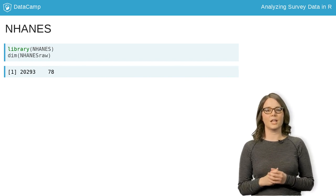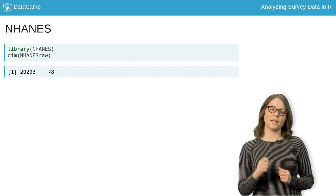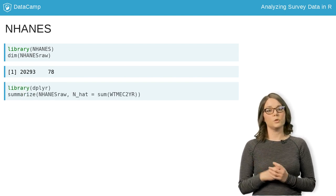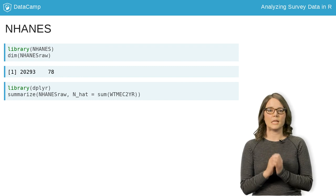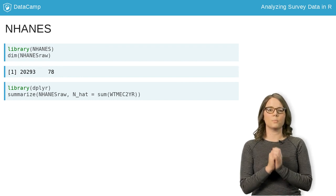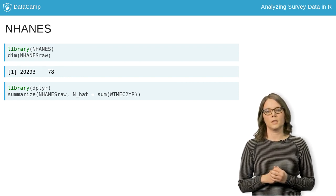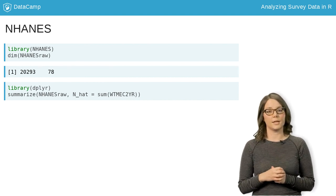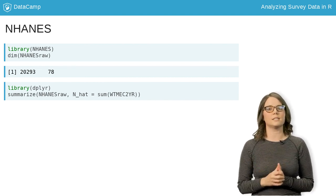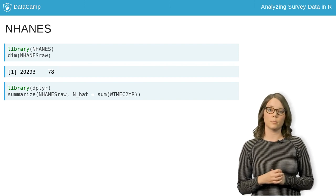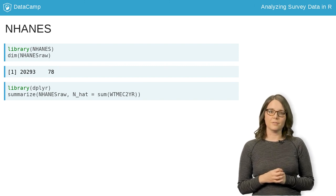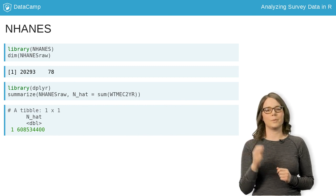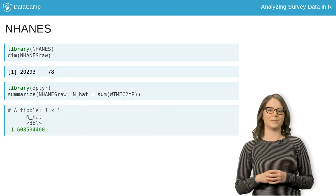Before specifying the design, we need to modify the survey weights variable, weight-mec-2-year. Weight-mec-2-year provides the number of people in the U.S. each sampled person represents. Therefore, summing all the weights via the SUMMARIZE command should provide a rough estimate of the total number of people in the U.S. However, we get an estimate of 608 million people, about twice as many as we should.